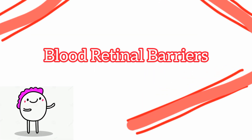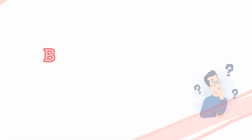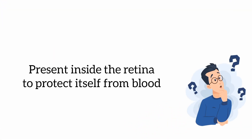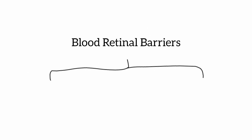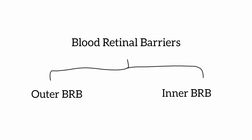Welcome back. In this video we are going to discuss what blood retinal barriers are. As the name indicates, blood retinal barriers are barriers present inside the retina that prevent the retina from leakage of blood. There are two types of barriers in the retina: the outer blood retinal barrier and the inner blood retinal barrier.